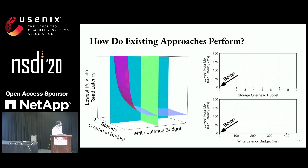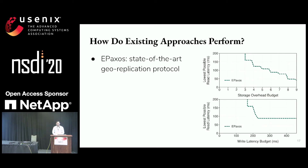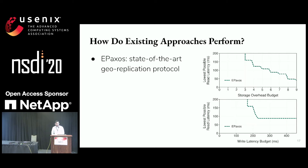First we look at ePaxos, which is a state-of-the-art replication protocol for wide-area networks. We can see that there is a trade-off between read latency and storage overhead — going from 3x storage to 9x storage allows us to cut latency to a third. However, we can also see that there's a step pattern to latency.